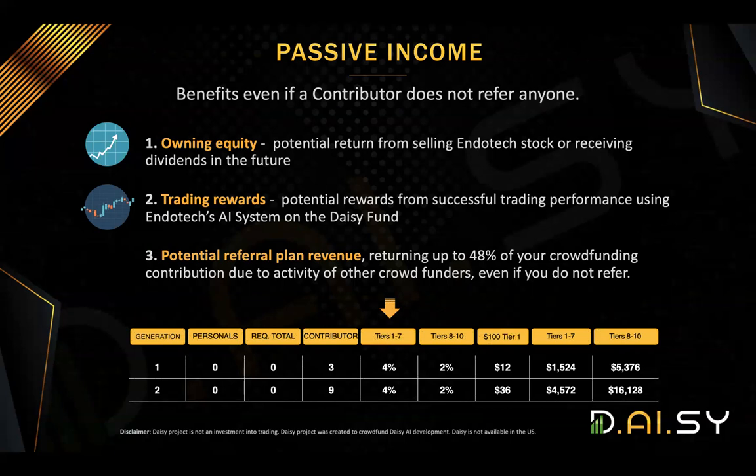Because the first two generations don't have any requirements to earn referral commissions, you don't have to invite people to earn from those two generations. This can be up to 48% of your initial contribution, and we will discuss all the details on the metrics income in a few moments.